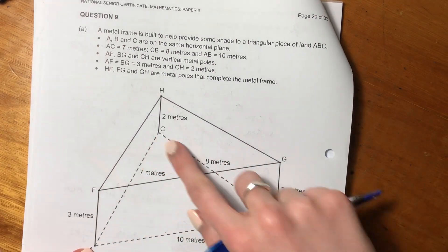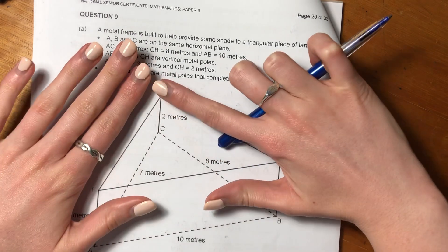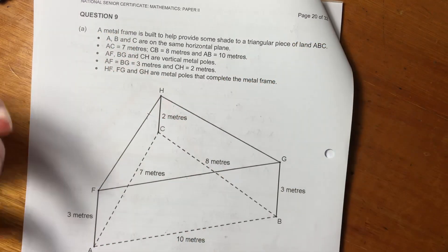So basically, this is ABC, the land. And then this is a frame that's sitting above it, kind of like a gazebo.